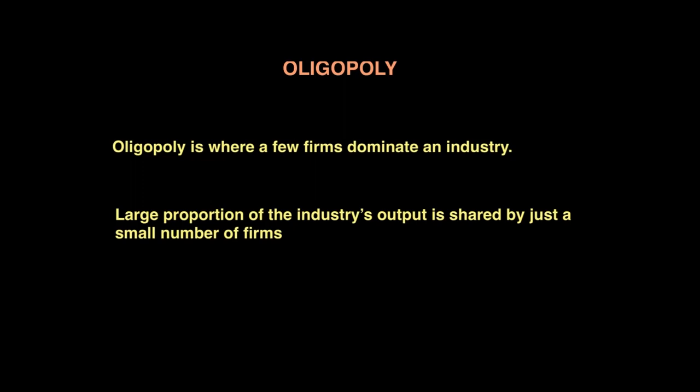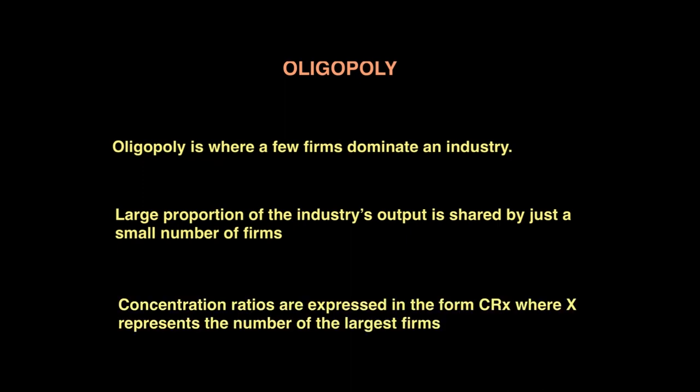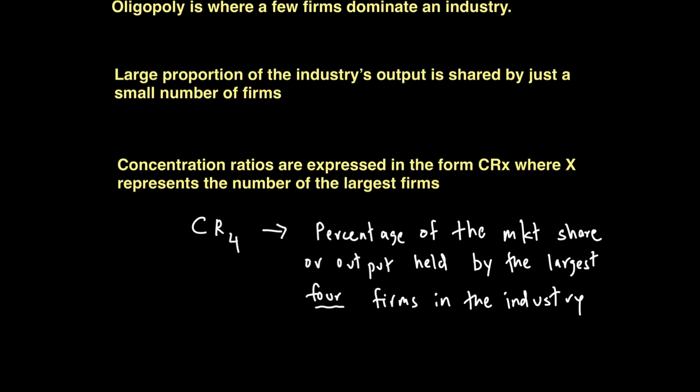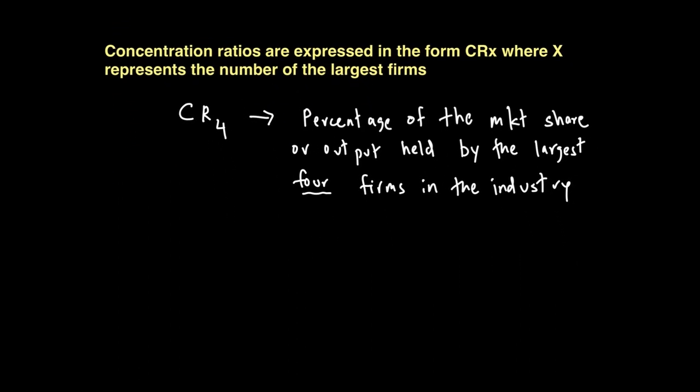What constitutes a small number varies, but a common indicator of concentration in industry is known as the concentration ratio. When we look at concentration ratios, they are expressed in the form of CRX, where X represents the number of the largest firms. For example, if we say CR4, this means we are looking at the percentage of market share or output held by the largest four firms in the industry.